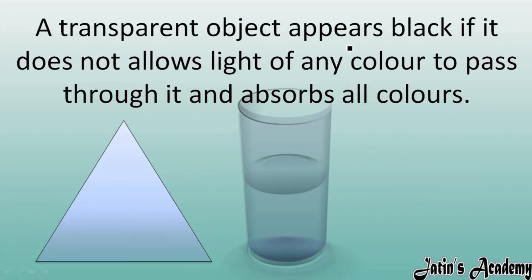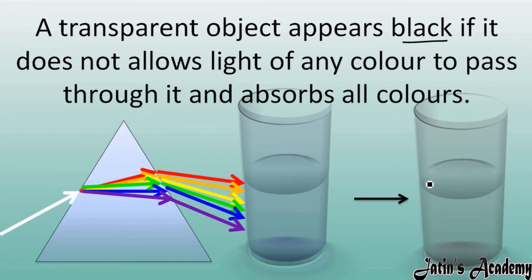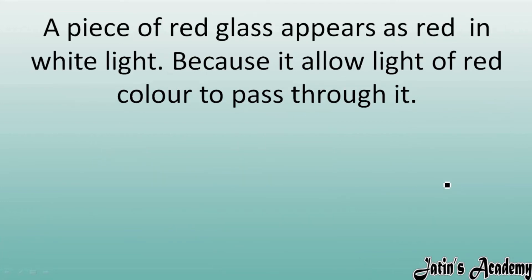Next, a transparent object that appears black: when white light falls on a transparent object and that object absorbs all the light radiations — does not allow any radiation to pass through it — then we are able to see that glass as black in color. Black color means it absorbs all the white light radiations.